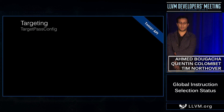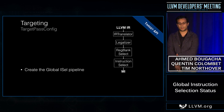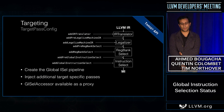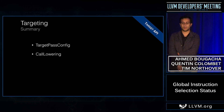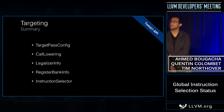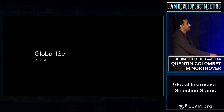We also want to generate the selection code from TableGen. Right now we're doing handwritten C++ code for ARM64, and we want to eventually generate it from existing TableGen patterns. For targeting, there's an additional utility: target-pass-config, which is responsible for creating the entire GlobalISel pipeline with methods for each individual pass. To summarize, we have: target-pass-config to describe the pipeline; call-lowering for ABI lowering; legalizer-info to describe what's legal and how to legalize it; register-bank-info to describe how to assign banks; and the instruction selector to map GMI to target-specific MI.